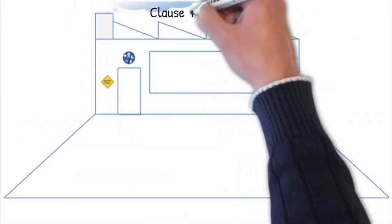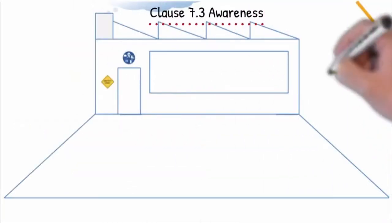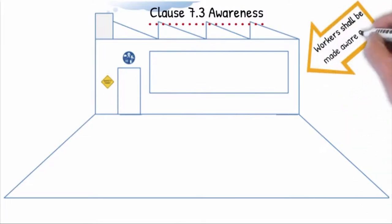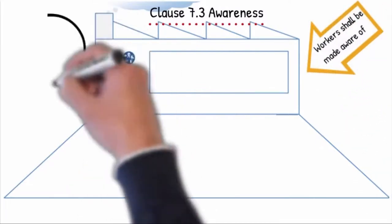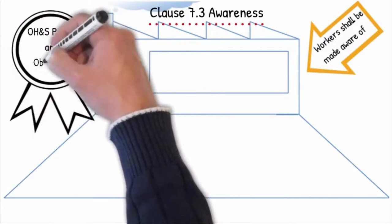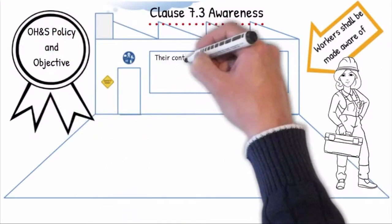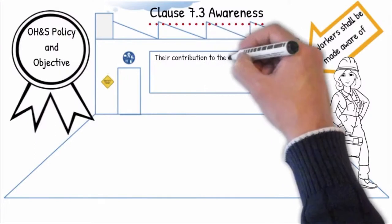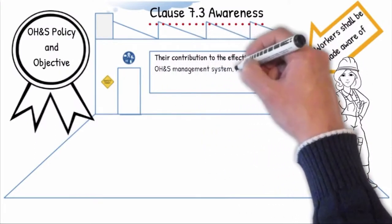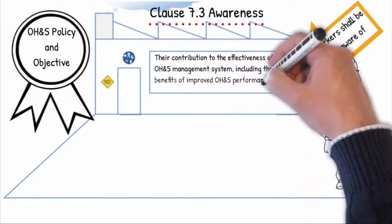Clause 7.3 Awareness: Workers shall be made aware of the OHS policy and objectives and the implications and potential consequences of not conforming to the health and safety requirements. They should understand their contribution to the effectiveness of the OHS management system, including the benefits of improved OHS performance.